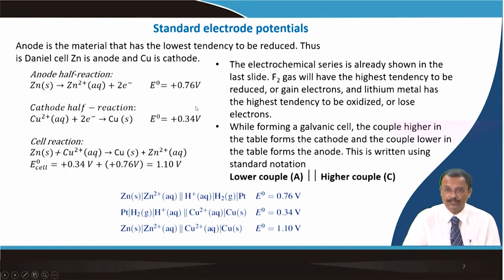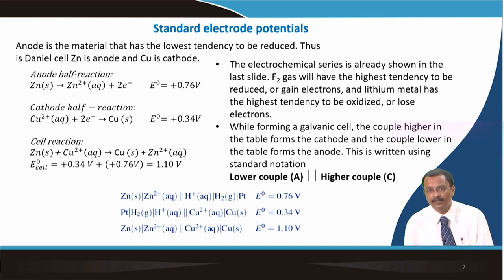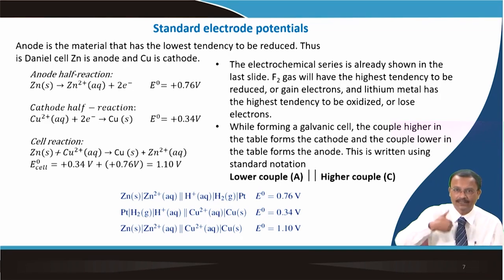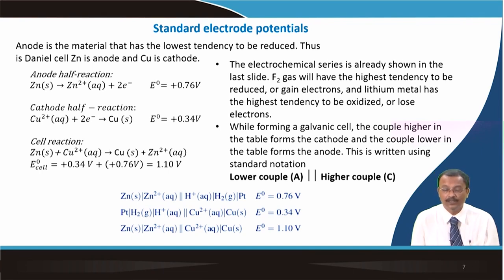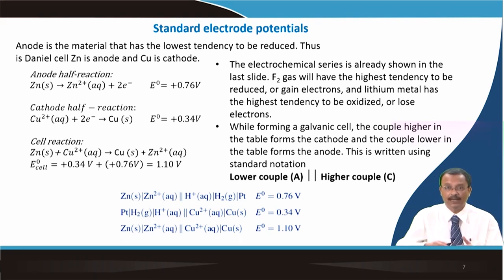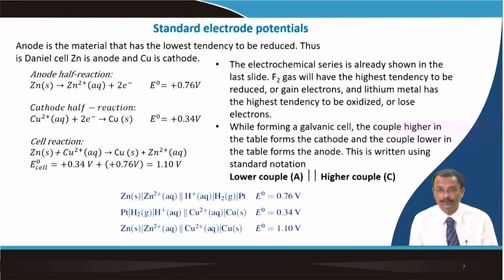In the electrochemical series, fluorine gas has the highest tendency to be reduced (gain electrons), while lithium metal has the highest tendency to be oxidized (lose electrons). To make a high-voltage battery, one would take these two materials, but it is extremely difficult to construct such a cell. When forming a galvanic cell, the couple higher in the table forms the cathode and the couple lower in the table forms the anode.